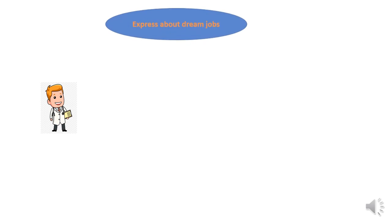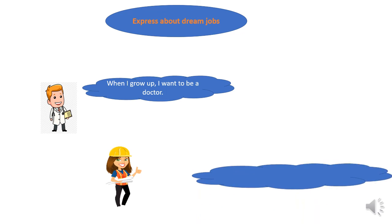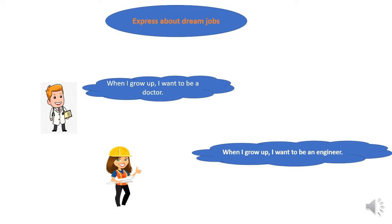If I want to express my future dream — what do I want to be when I grow up, when I become an adult — I say: 'When I grow up, I want to be a doctor.' And if I want to be an engineer, I say: 'When I grow up, I want to be an engineer.' Be careful — the word 'doctor' starts with a consonant, so we put 'a' before it: a doctor. But the word 'engineer' starts with E, which is a vowel, so it takes 'an': an engineer.